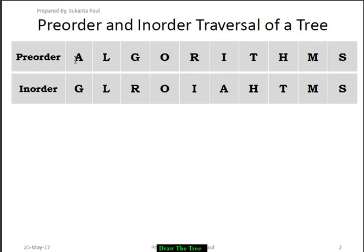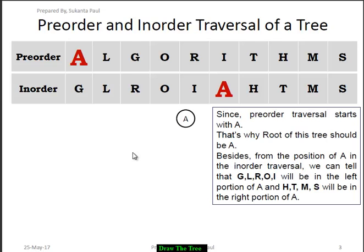We look at all of the nodes in the pre-order sequence and then go to the node in in-order. The first node in pre-order is A, so A will be the root node of the tree. We see that A is present at a certain position in the in-order sequence, which means GLROI is the left portion of A and HTMS should be present in the right portion of A.